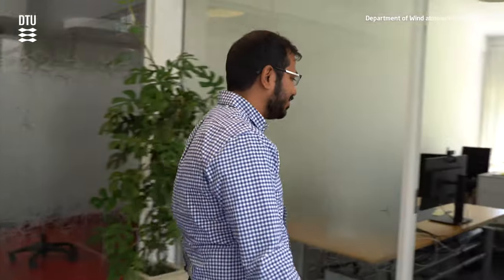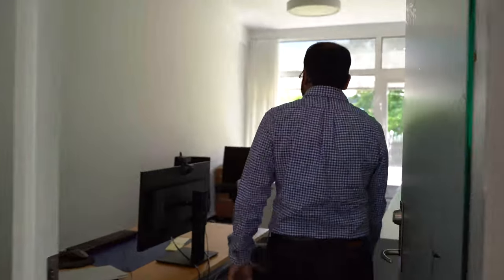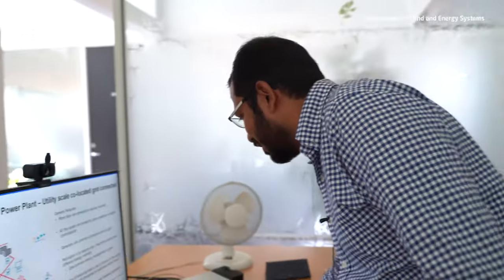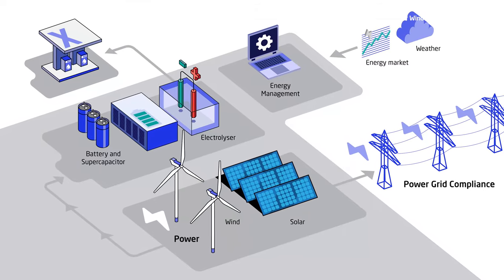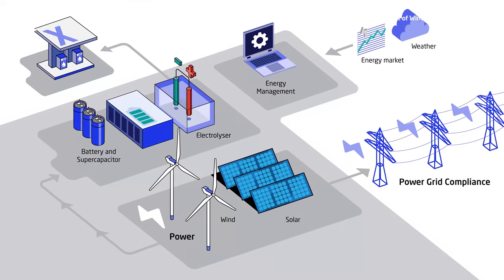This course will look into the utility scale — that means large scale, multi-megawatt, gigawatt scale — of hybrid power plants and how to design them, how to operate them, how to control them, how to meet the grid code requirements, how to operate the batteries and other storage technologies inside a hybrid power plant, how to maximize their lifetime, and many other interesting aspects.